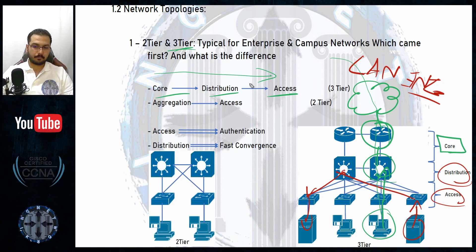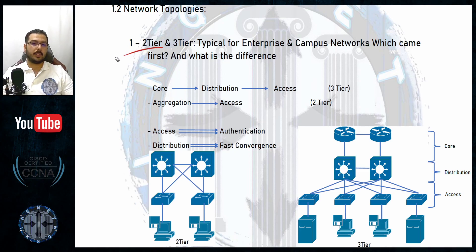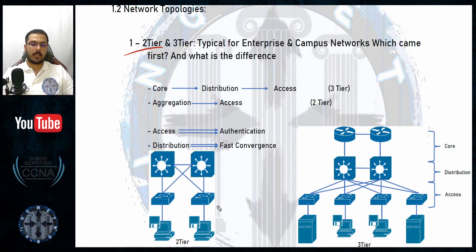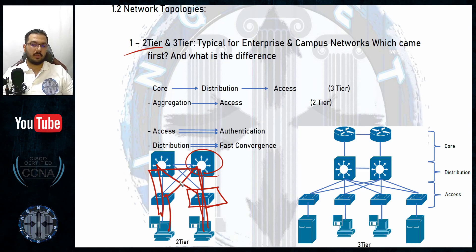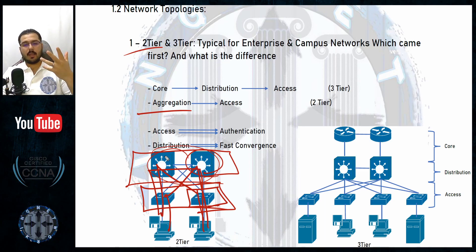Now for something different: the collapsed design, also called the two-tier design. We are collapsing the three-tier into something smaller, simpler, with less components and less complexity — only two layers. Layer one is the access layer. Layer two is not called distribution; in the two-tier design it is called the aggregation layer, because it is the collapsed result of combining both the distribution and the core.